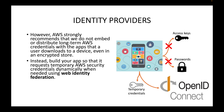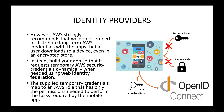The supplied temporary credentials map to an IAM role — this is another use case for IAM roles. Just as we saw roles used to log in from one AWS account to another, identity providers also use IAM roles to provide temporary credentials. This IAM role has only the permissions needed to perform the tasks required by the mobile application.